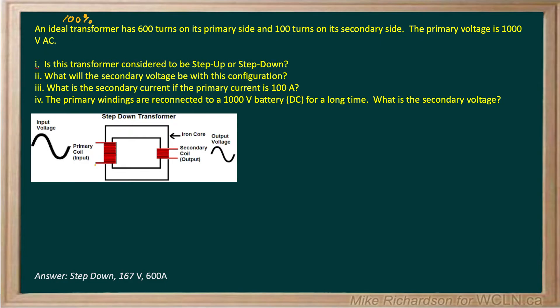Our primary coil is the one that's connected directly to our power source. So there's 600 turns on this side and then on the other side it drops down to 100 turns on the secondary side.